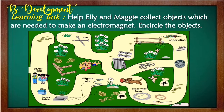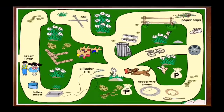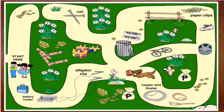Here we go with Learning Task Number 1. Let us help Ellie and Maggie collect objects which are needed to make an electromagnet. Let us encircle the objects. Here in the picture, we are going to help Ellie and Maggie collect what they will need for their electromagnet project.